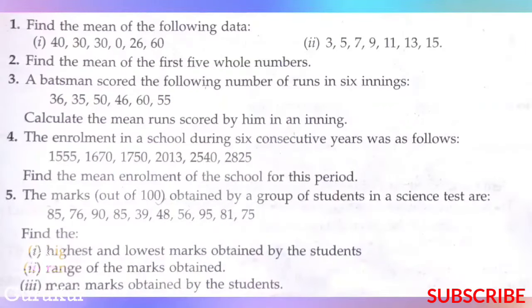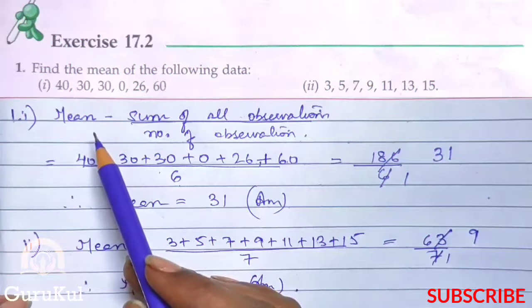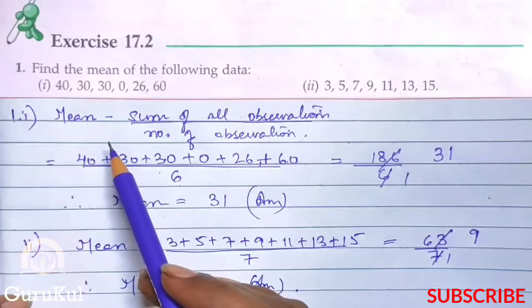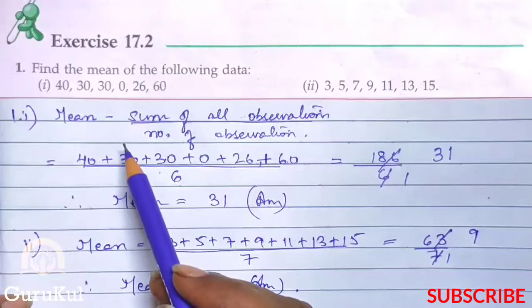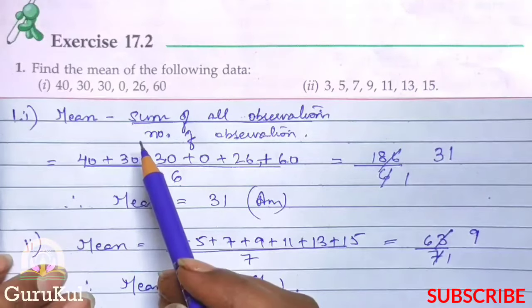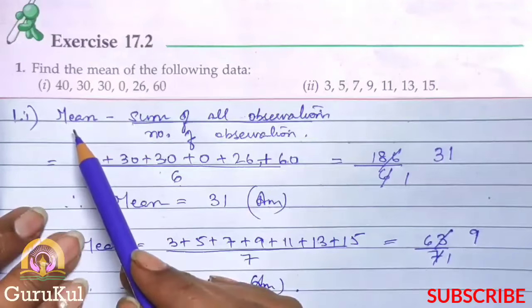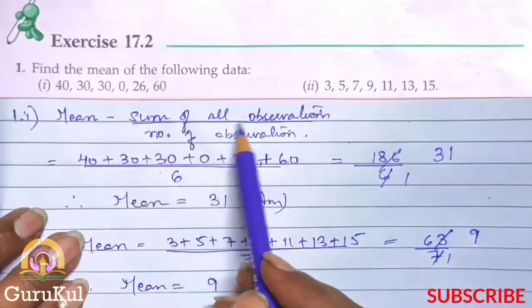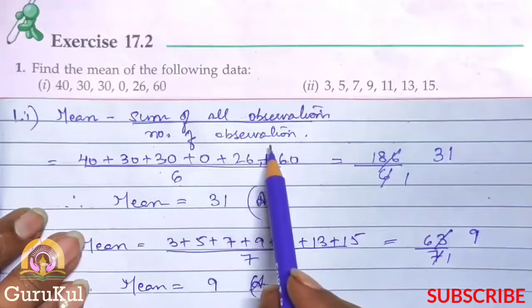Today I am going to start with part 1 of exercise 17.2. So question number 1. Here we have to find out the mean. This chapter is already done in class 6. Let me just refresh it. Mean's formula is sum of all observations divided by number of observations.